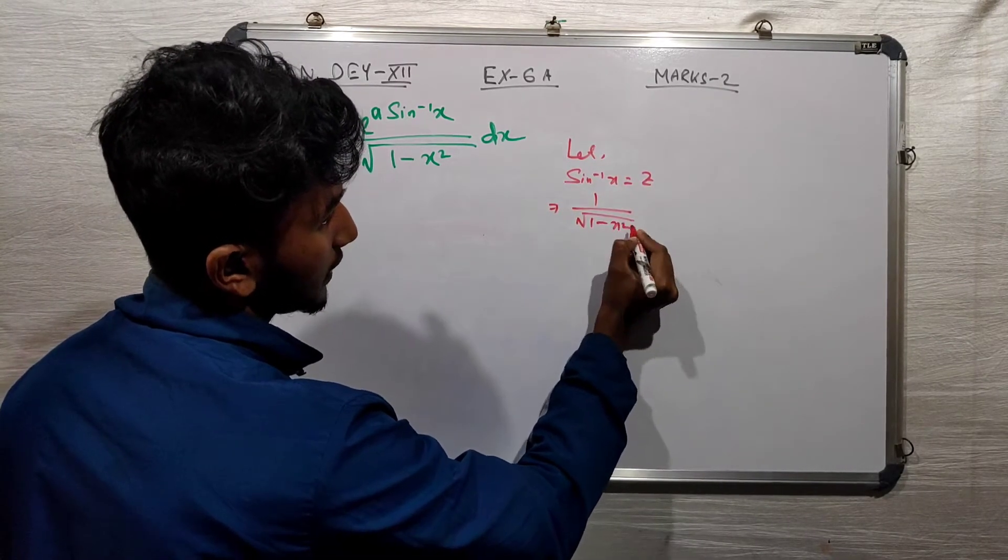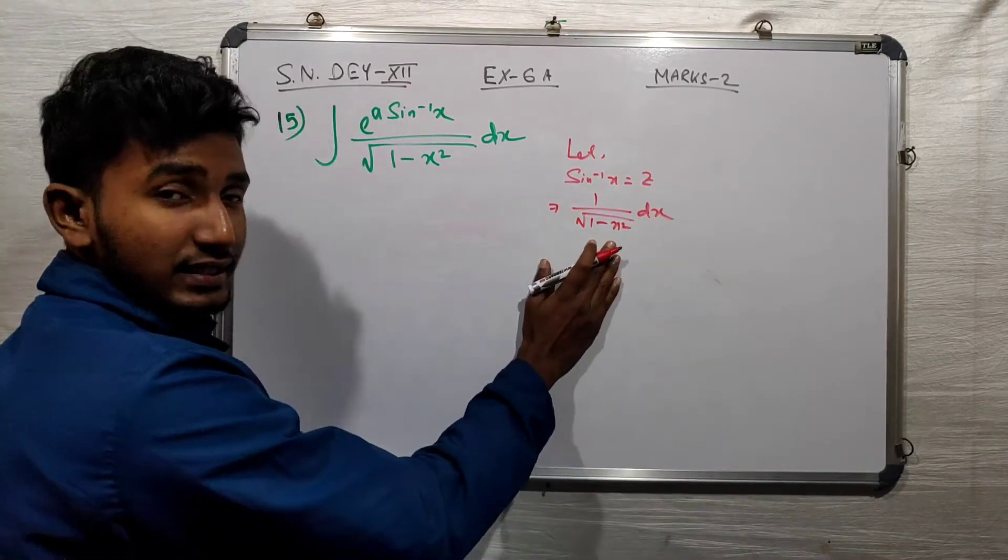Then 1 by root over 1 minus x squared dx is the derivative of sine inverse x.